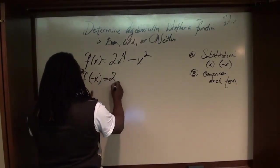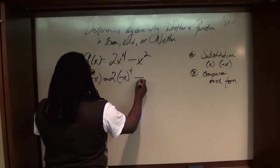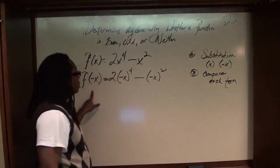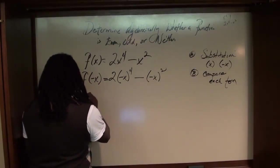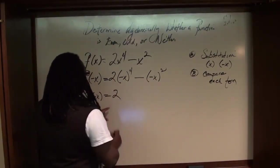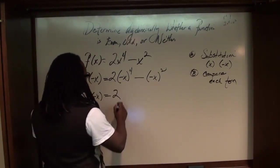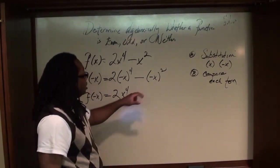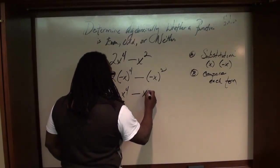This is equal to 2 times negative x to the 4th minus negative x squared. When you do the arithmetic, you find that f(-x) is equal to 2 times x to the 4th power — because negative x to the 4th power is just x to the 4th — minus x squared, since negative times negative x squared is simply x squared.